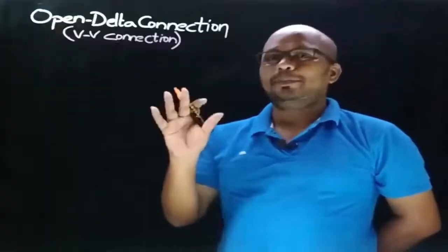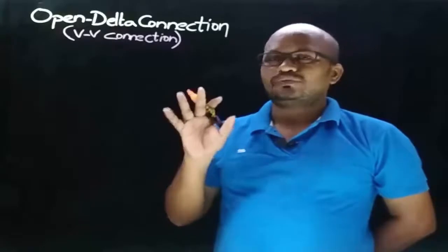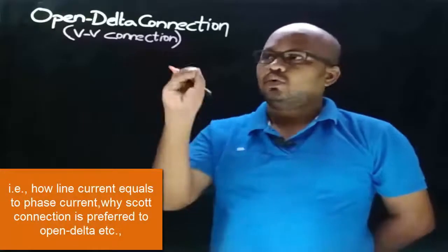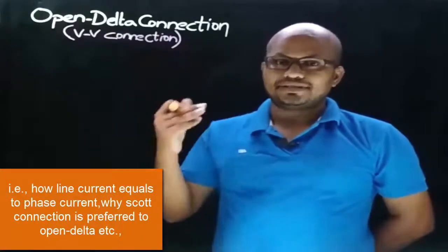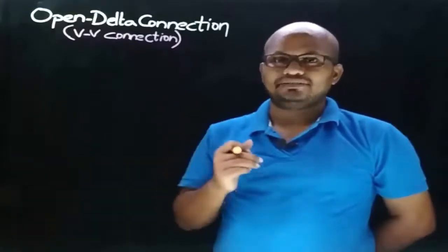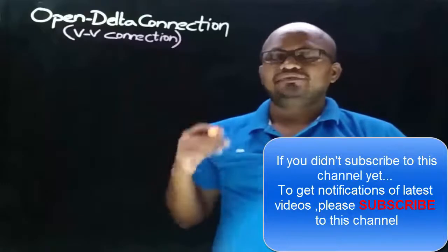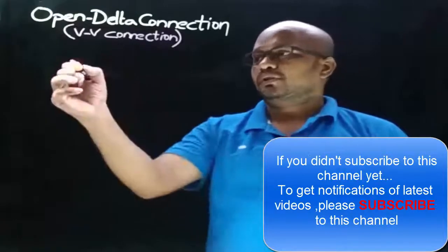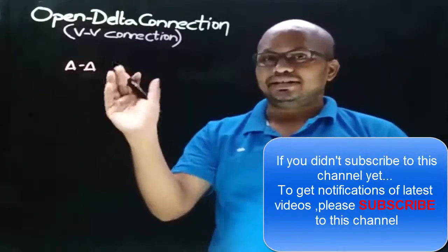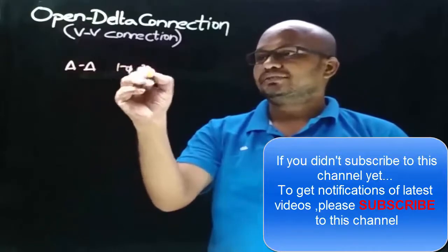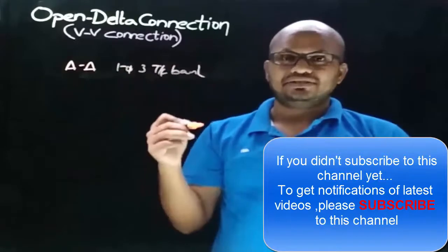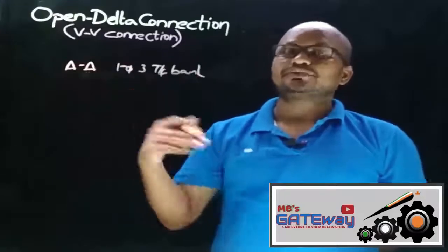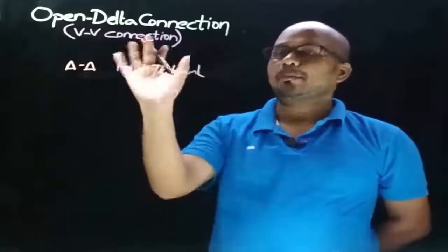Welcome to the lecture on open delta connection. From this video lecture, most of the doubts on open delta connection will get clear — that is, how one of the transformers in open delta connection operates in 30 degrees lead and the other transformer in 30 degrees lag. Open delta connection is also called VV connection, and few others simply refer to this as V connection. It is used where one of the transformers in a delta-delta connected single-phase three-transformer bank gets failed and the quantity of supply is to be maintained.